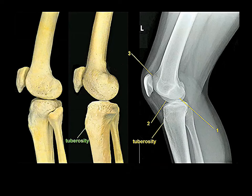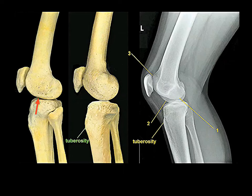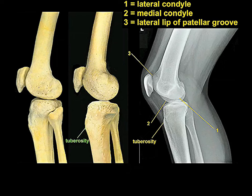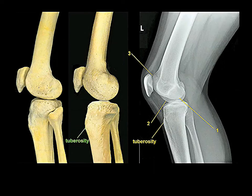The femoral condyles are not shaped symmetrically. There is a little area of concavity in the lateral condyle that doesn't exist in the very round medial condyle, and you can identify this on a lateral film. The most prominent lip of the patellar groove is the lateral one, and you can trace it in continuity with the lateral condyle of the femur.